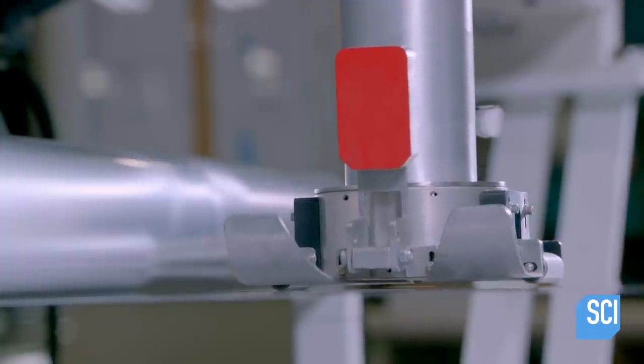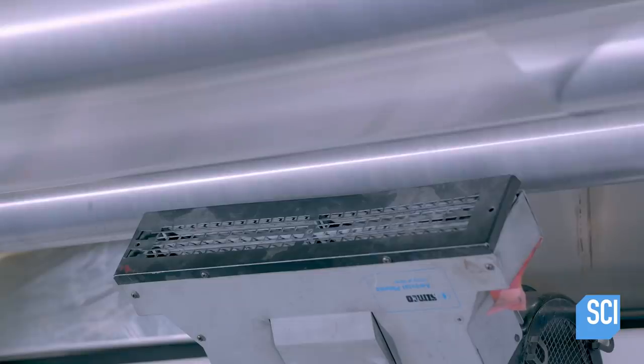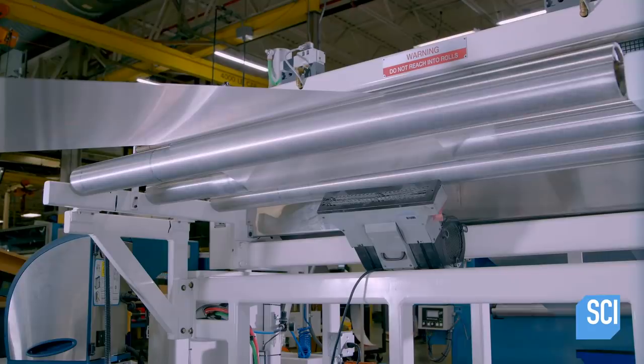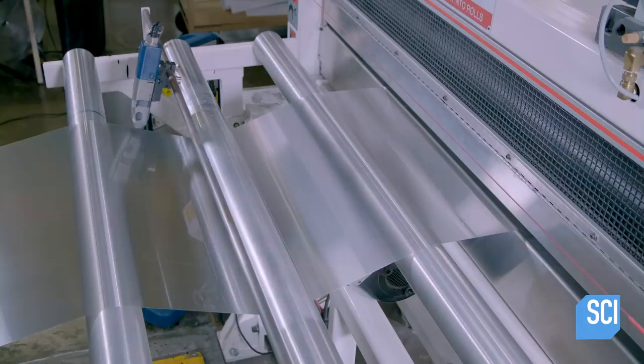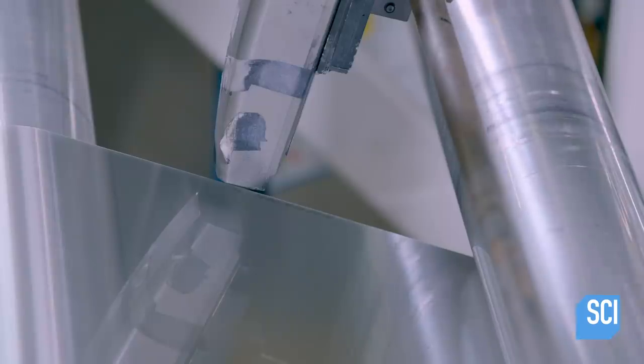Then a gauge measures the lens's thickness. A blower device dissipates static. An inkjet printer prints information on the edge. This indicates the optical resolution of the lenses, the type of plastic, and the lot number.